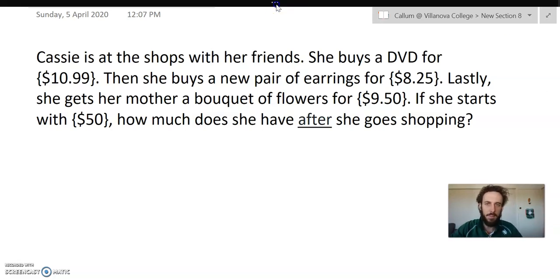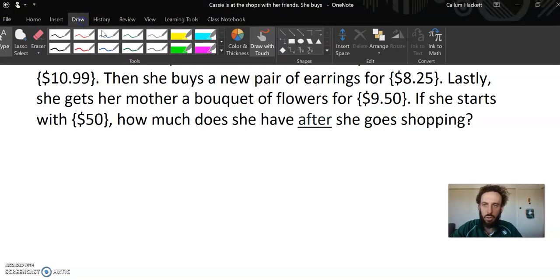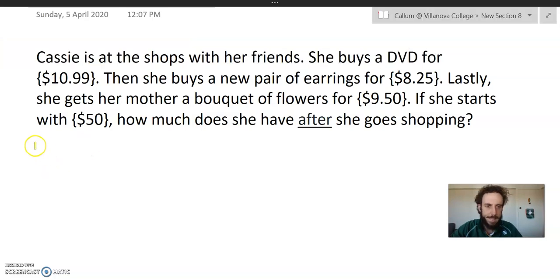So in terms of following our problem solving strategies that we've spoken about, the first thing I'm going to do is go and circle the numbers. And I'm just going to highlight because my stylus isn't great. So I can see there are a bunch of different amounts that are listed here, and I'm just going to go circle them. So in terms of looking for clues, I can see things like it says she buys a DVD, then she buys, so that's indicating she's buying a few different things, so maybe addition's going to come up.